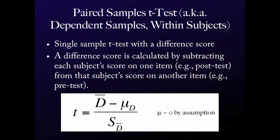Some would have positive gain scores, some would have negative gain scores. When I summed them all up and took the average, the average should be zero, right? If there's no effect. So the population mean of a difference score population is zero by assumption.